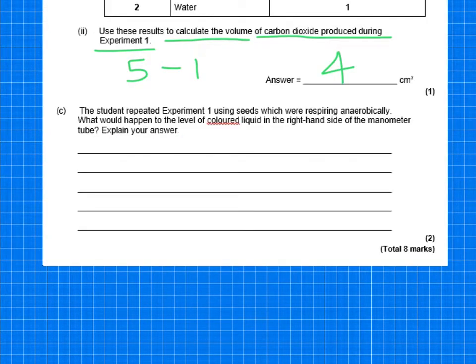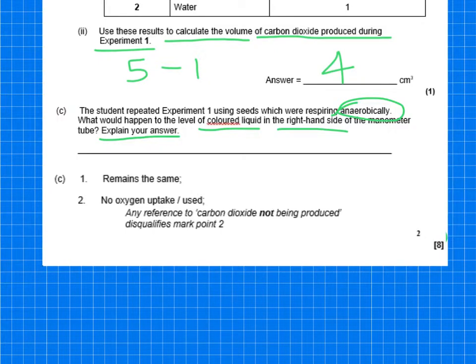So 1C, the student repeated the experiment using seeds which were respiring anaerobically. What would happen to the level of coloured liquid in the right-hand side of the manometer? It says explain your answer. It's for two marks. Now, it's testing your knowledge that anaerobic respiration is without oxygen. So if it was anaerobic, there'd be no oxygen uptake. And therefore, if there's no oxygen uptake, it would remain the same. So it would remain the same because basically no oxygen is being taken up and it's not being used.